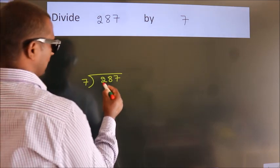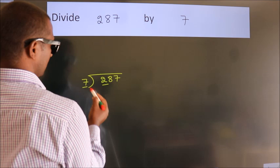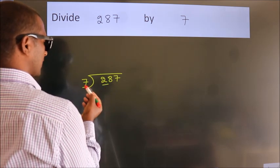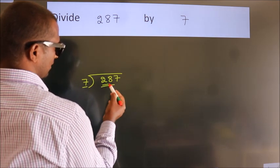Next, here we have 2, here 7. 2 is smaller than 7, so we should take 2 numbers: 28.